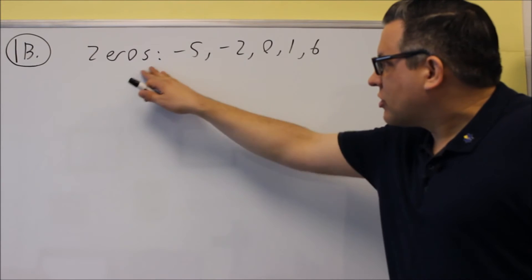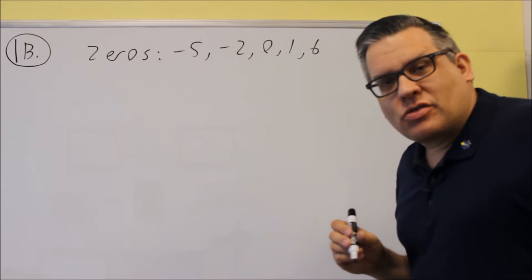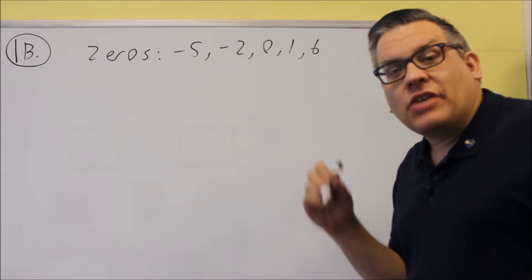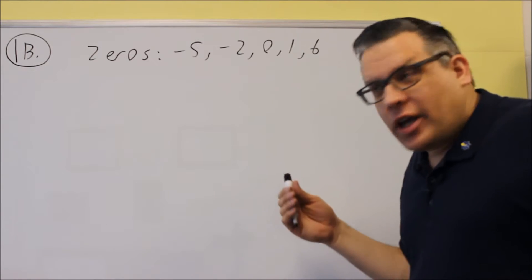Okay, for 1B, they give us a list of zeros again, but pay close attention to the instructions. The instructions say leave in factored form, so we're not going to expand this like we did for 1A.